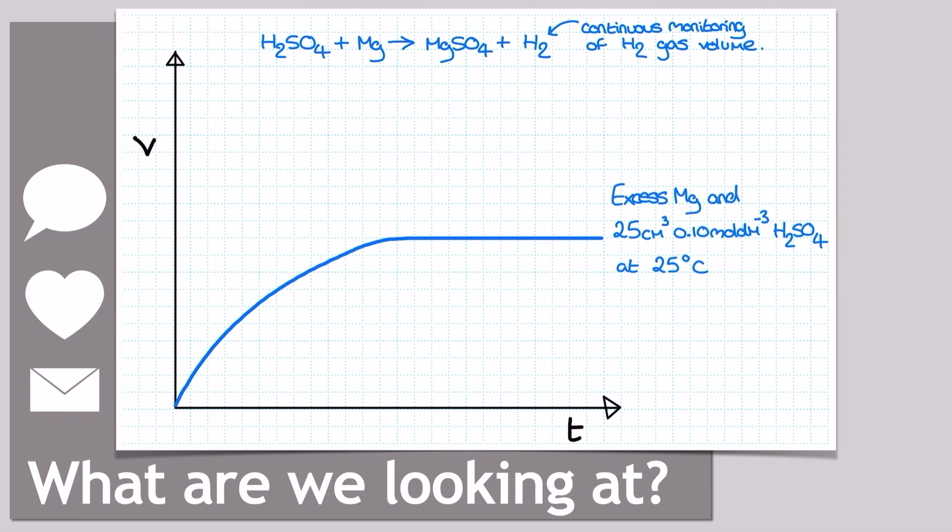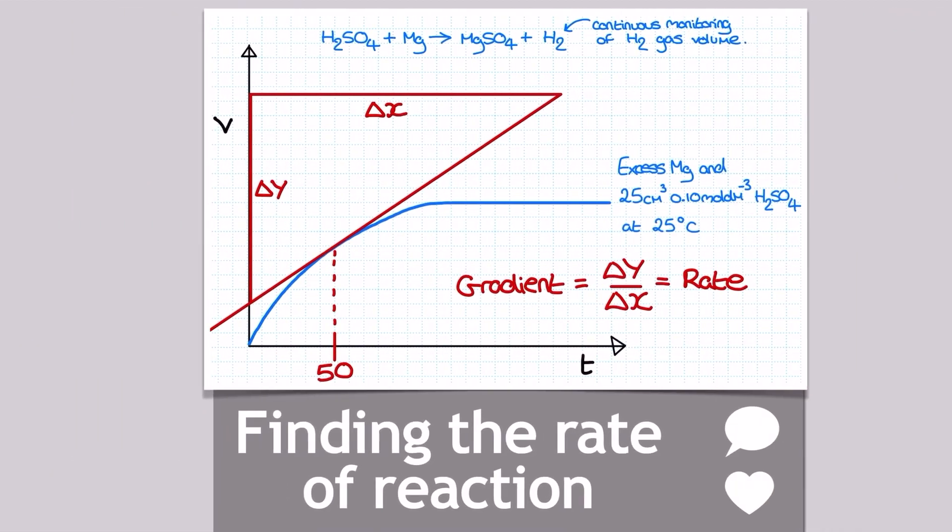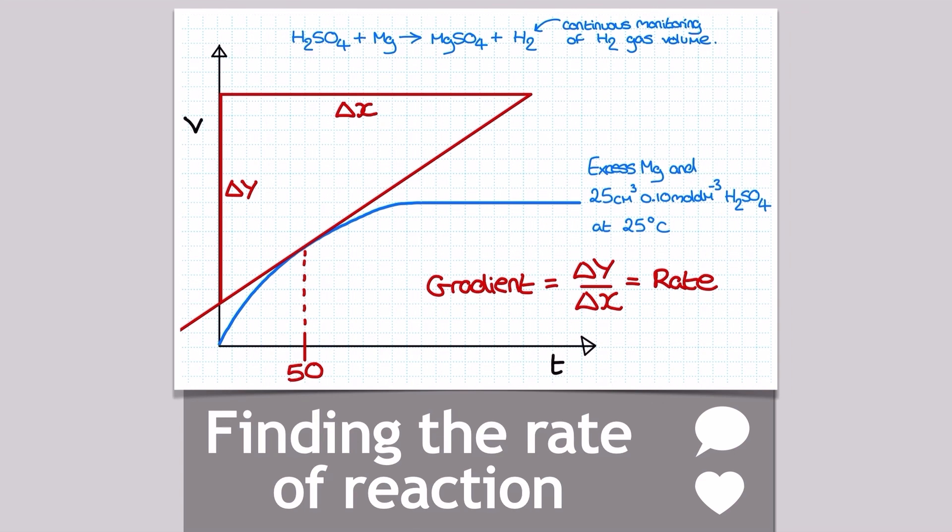What can we do with this graph to begin with then? A common request in the exam is to work out the rate of reaction. Rate of reaction is represented here by the gradient of the line, and since this line is actually a curve, the rate of reaction must be varying over time. More on that part later.